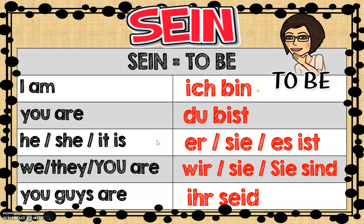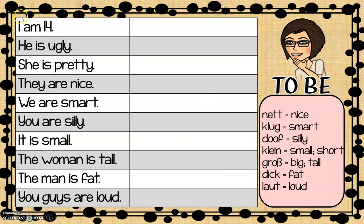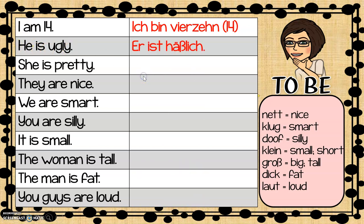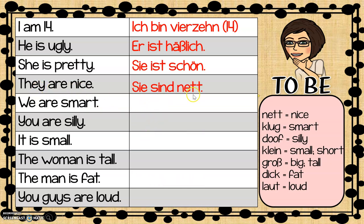Now let's take a look at some sentences with the verb 'to be' in them. 'I am 14' — 'Ich bin 14.' 'He is ugly' — 'Er ist hässlich.' 'She is pretty' — 'Sie ist schön.' 'They are nice' — 'Sie sind nett.'